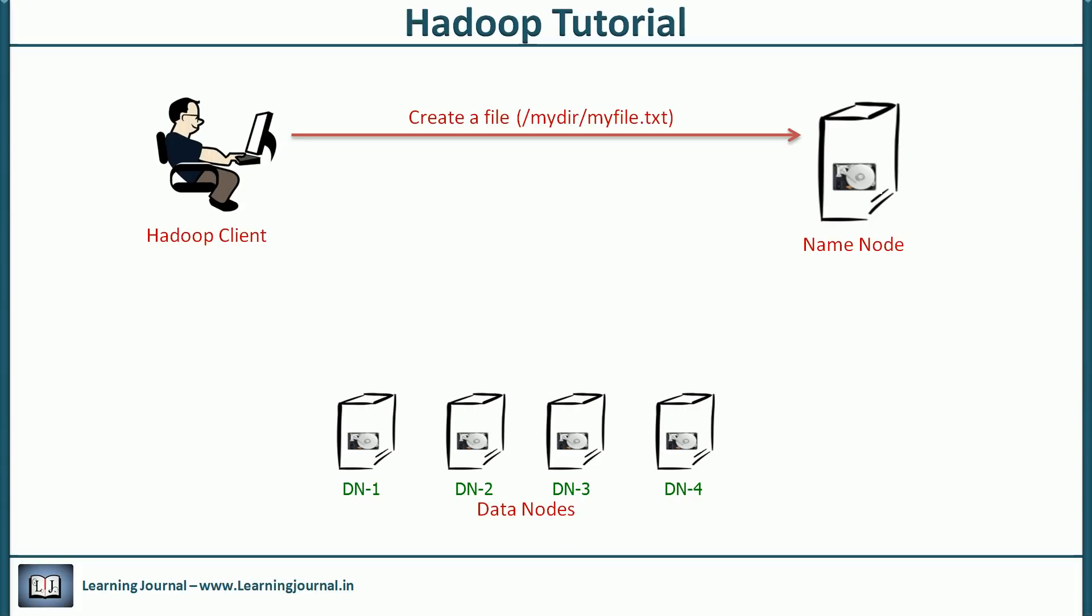Name node can perform these checks because it maintains an image of entire HDFS namespace into memory. We call it in memory fs image or file system image. If all the tests pass, the name node will create an entry for the new file and return success to the client. The file name creation is over but it is empty. You haven't started writing data to the file yet. Now, it's time to start writing data.